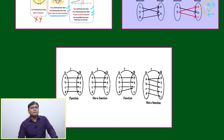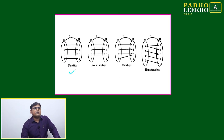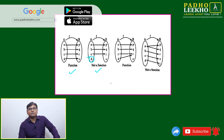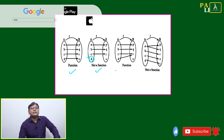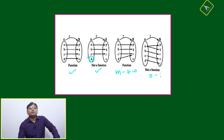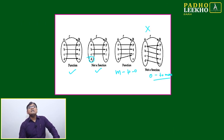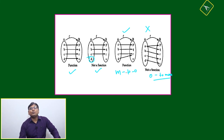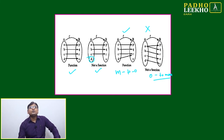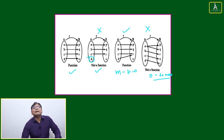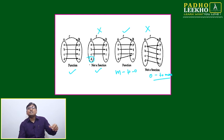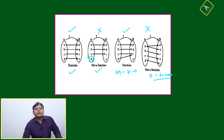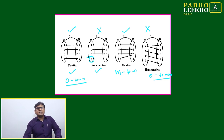More clarifying examples: a mapping where one input is left out (not defined) is not a function. A many-to-one mapping is a function. A one-to-many mapping is not a function because one input gives more than one output. A one-to-one mapping is a function. If one element in the domain is not defined (has no output), it is not a function.